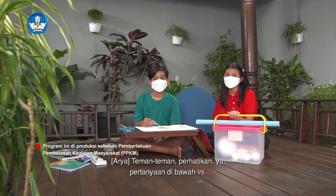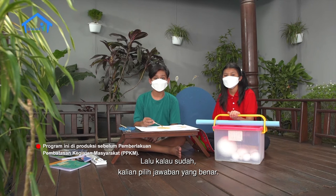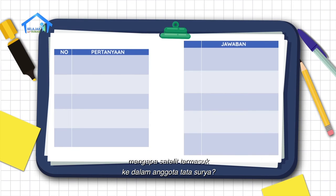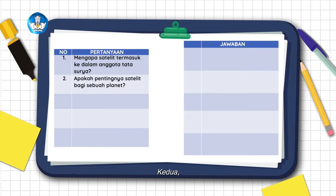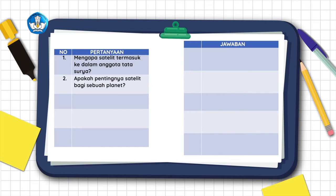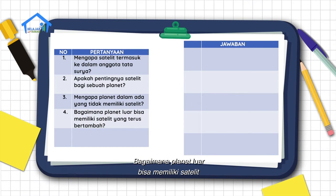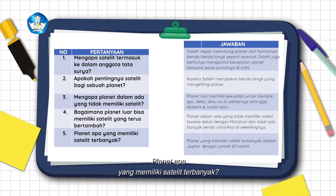Berarti kalau aku kasih pertanyaan seputar satelit, kamu bisa jawab dong? Pasti dong. Teman-teman, perhatikan ya pertanyaan di bawah ini, lalu kalian pilih jawaban yang benar. Soal pertama: mengapa satelit termasuk ke dalam anggota tata surya? Kedua: apakah pentingnya satelit bagi sebuah planet? Ketiga: mengapa planet dalam ada yang tidak memiliki satelit? Keempat: bagaimana planet luar bisa memiliki satelit yang terus bertambah? Kelima: planet apa yang memiliki satelit terbanyak?